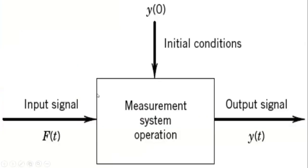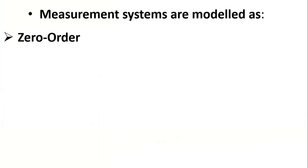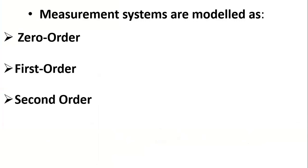For a typical measurement system operation, we have input signal f(t) and initial conditions y(0), then output signal y(t). We'll be designing a generalized measurement system and deriving the governing equation. Measurement systems are broadly modeled depending on the power of the differential equation: zero order, first order, and second order instruments.